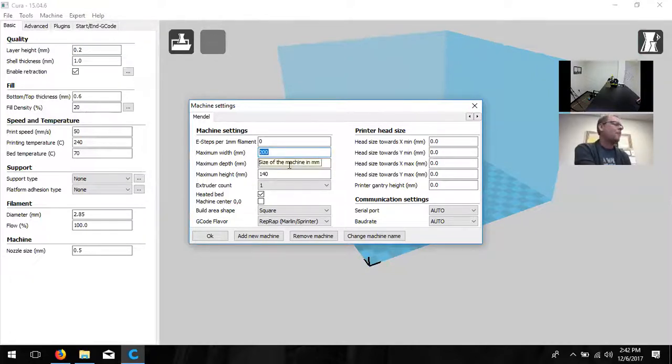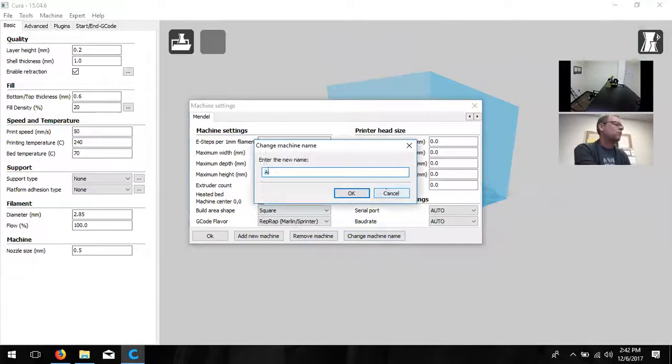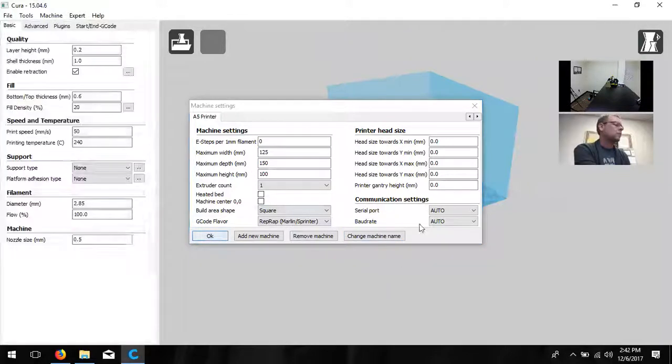We're going to change the width, depth, and height to match our build area. 125 for the width, 150 for the depth, 100 for the height. The last thing we need to change is that heated bed box - make sure to uncheck it. If you want to change the machine name, you're welcome to. These are called A5 printers. Then click okay.